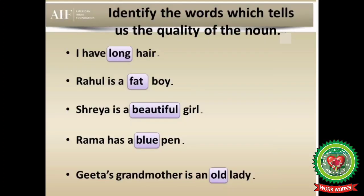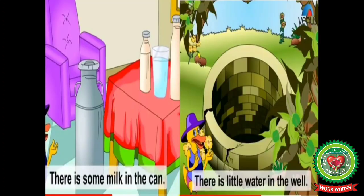Here is an exercise — identify the words which tell us the quality of the noun. I have long hair — what kind of hair? Long — adjective of quality. Rahul is a fat boy — what kind of boy? Fat — adjective of quality. Shreya is a beautiful girl — beautiful — adjective of quality. Rama has a blue pen — blue — adjective of quality. Geet's grandmother is an old lady — what kind of lady? Old — adjective of quality.